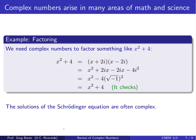Complex numbers arise in many different areas of math and science. For example, in factoring: if you want to factor x squared plus 4, you need complex numbers. The factorization is x plus 2i times x minus 2i. Multiplying this out, you get x squared plus 2ix minus 2ix minus 4i squared. The middle two terms cancel, and since i squared equals negative 1, we're left with x squared plus 4. So it checks.